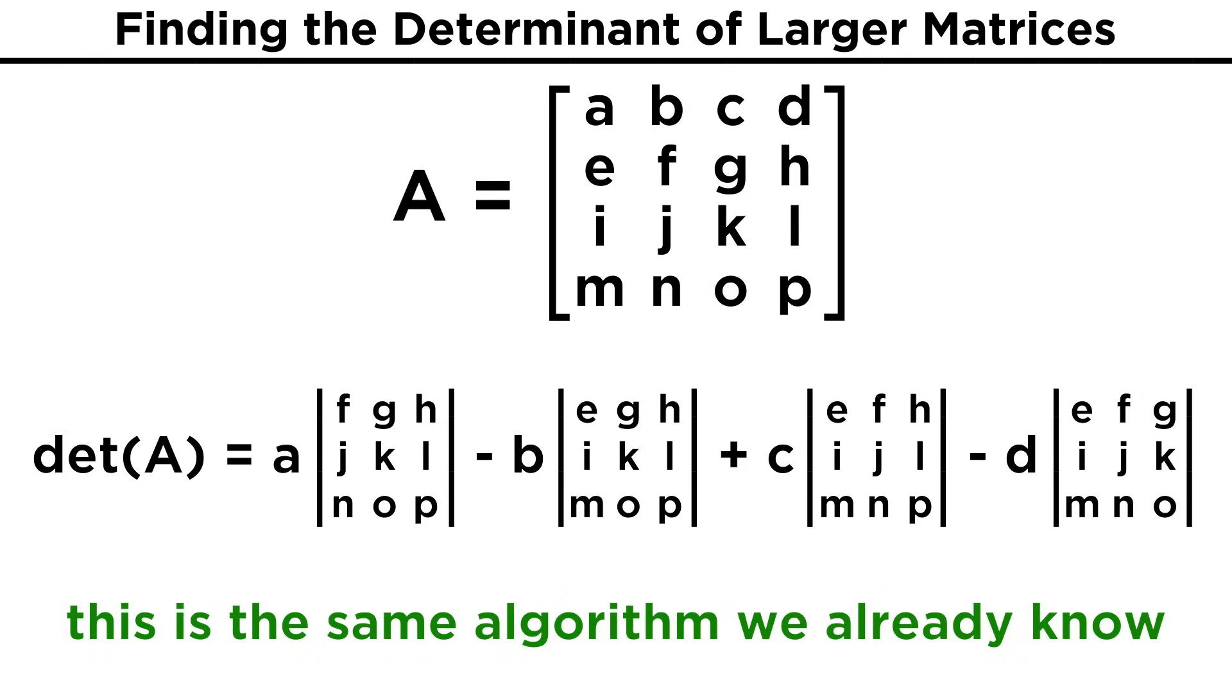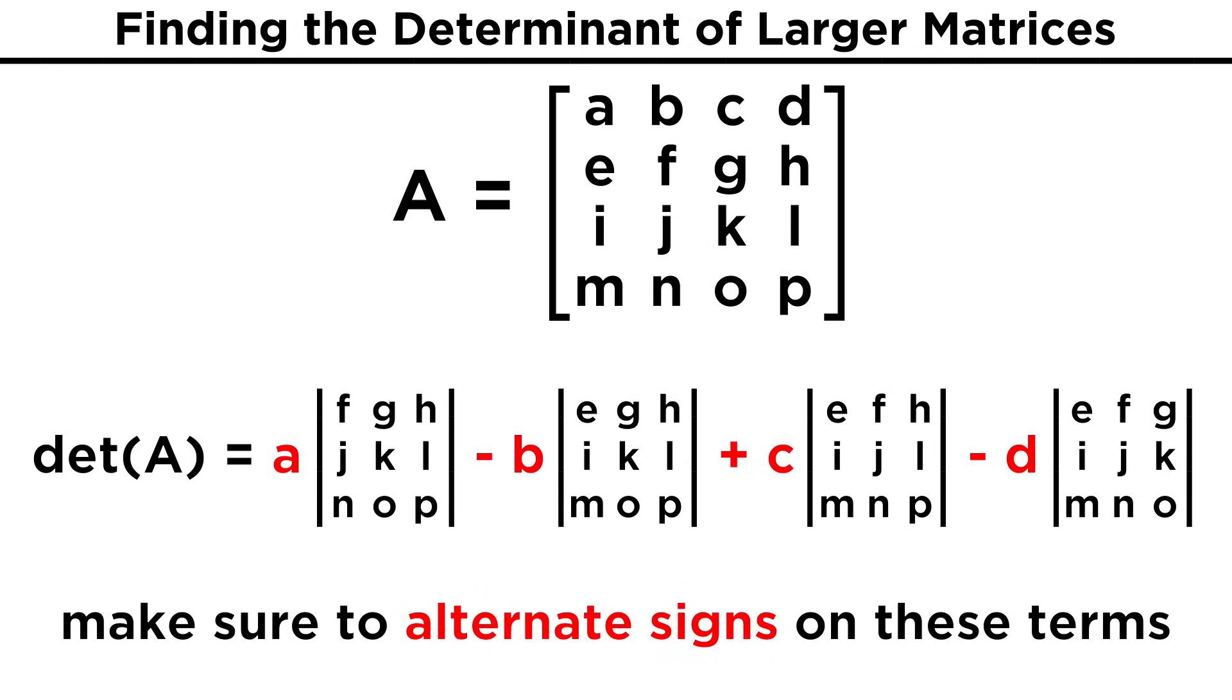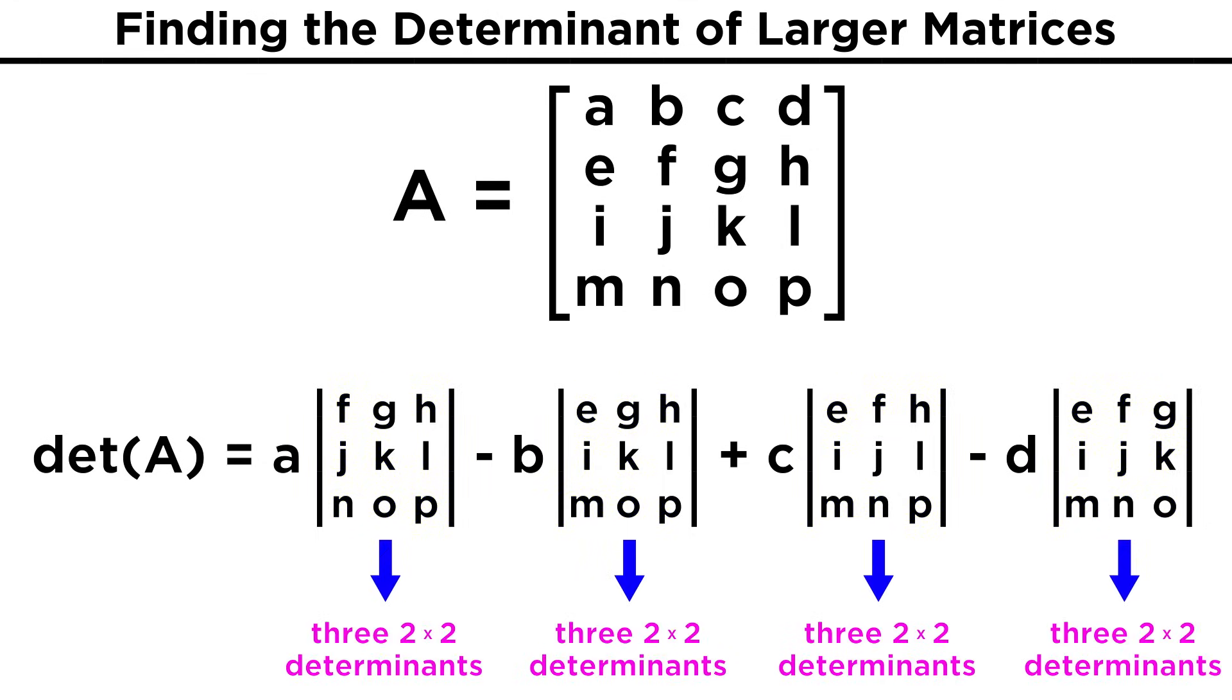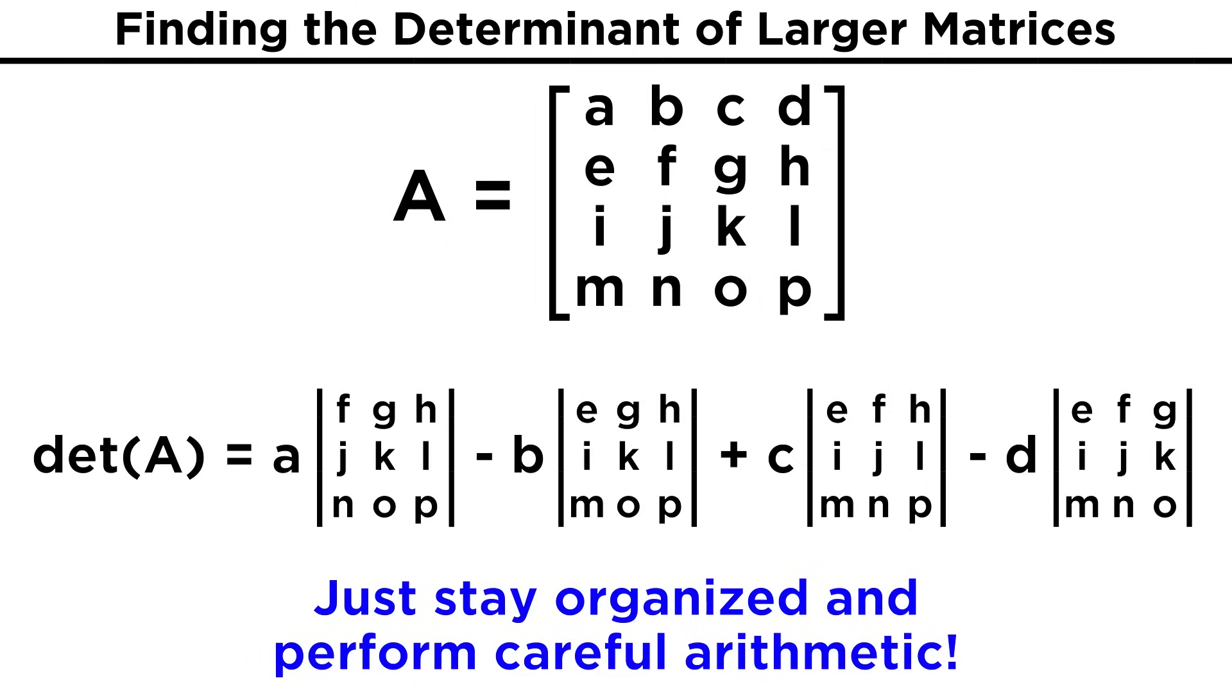So we are doing the same thing we did before, going across the first row, and blocking out the row and column containing a particular entry, and multiplying by the relevant determinant. Also, notice that we subtract a term, then add the next, then subtract the next. This would continue alternating for as many terms as were necessary. Now that we are here, we have four separate three by three matrices that we need to find determinants for, and as we just learned, each of these will involve the determinants of three separate two by two matrices. So we have definitely made quite a bit of work for ourselves. But, as long as you remain organized and stay on top of your arithmetic, there is no reason that you can't find determinants for matrices of this size or even larger.